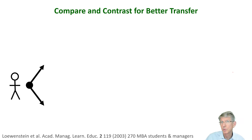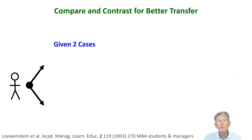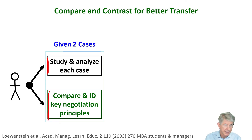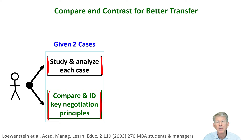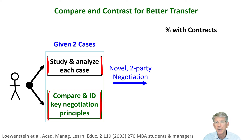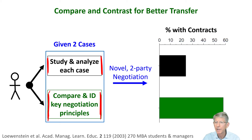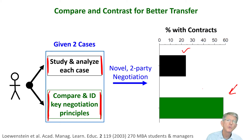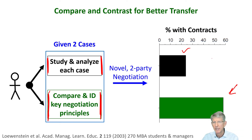In another study related to comparing and contrasting, MBA students were randomized to study two different negotiation cases. In both conditions, they get the identical cases — it's what they do with the material that makes all the difference: reading each one sequentially and studying it, versus comparing and contrasting. Then they're given a completely new task — a two-party negotiation — and the question is who will end up with more contracts. The group that did the comparison and contrasting ended up with far more contracts than the group who studied one and then the other. Apparently, when you do the comparison and contrasting, you're able to understand the deep meaning and then transfer to a new domain, as in contract negotiations.